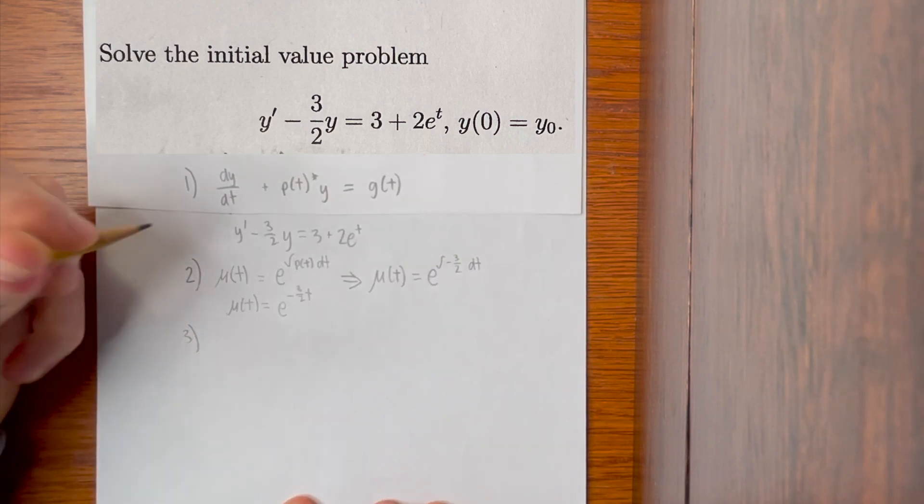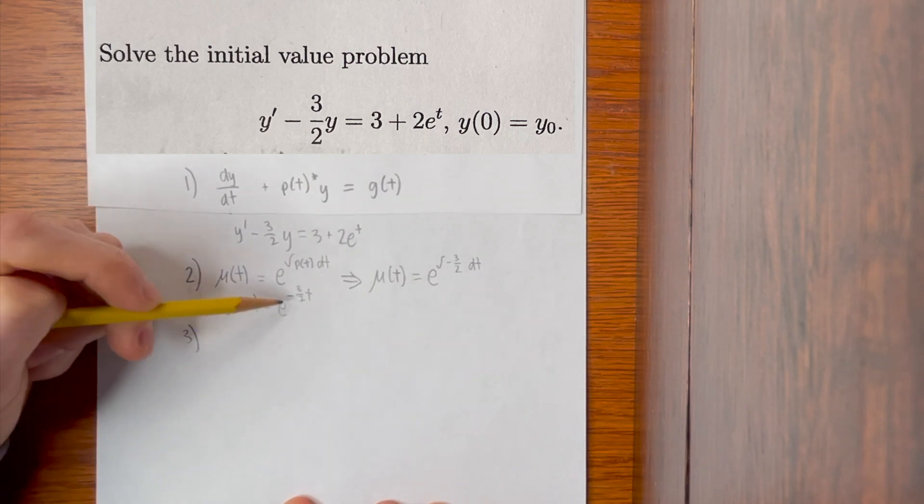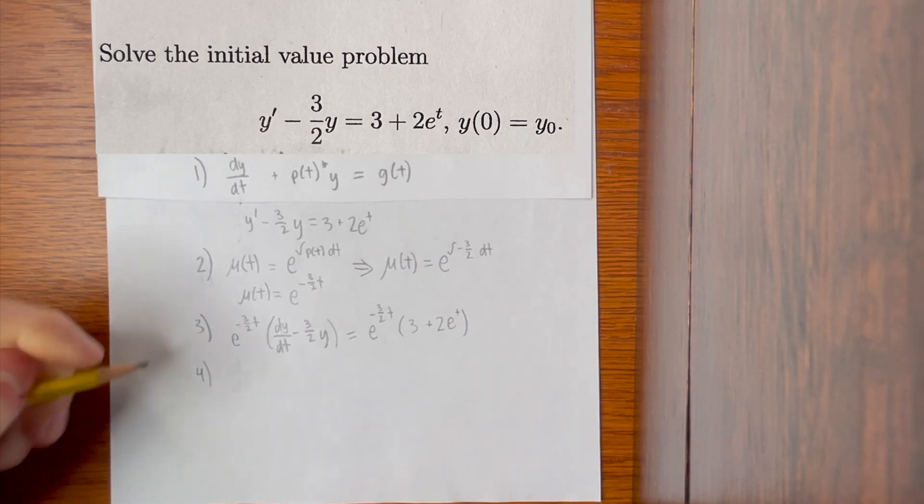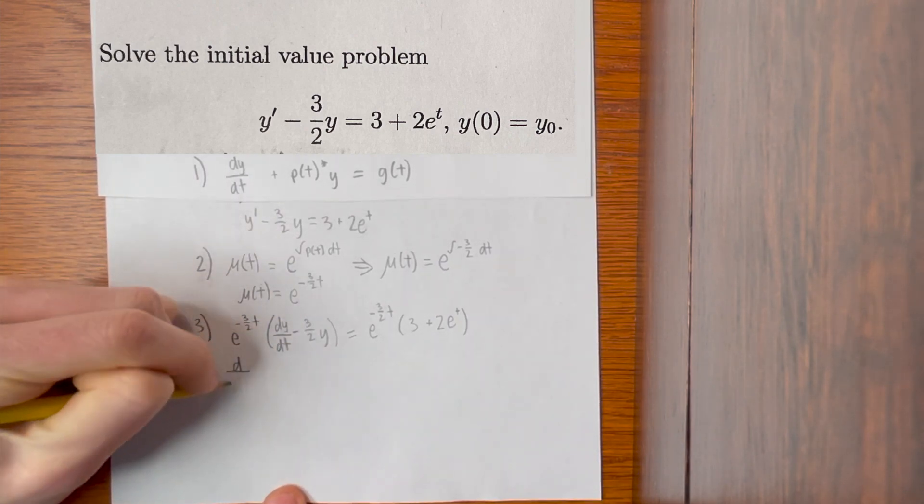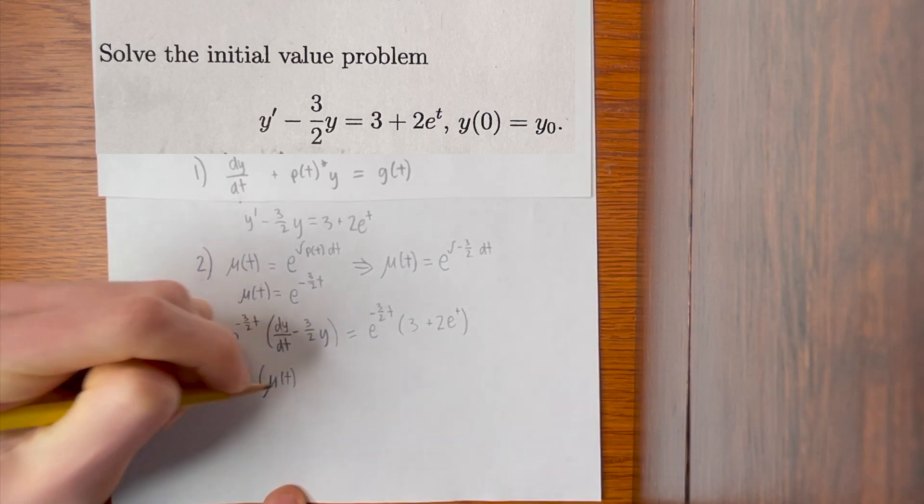The third step is to multiply both sides of this differential equation by this integrating factor. I simply rewrote y' as dy/dt. The next step is to rewrite the left side of the equation, which always becomes d/dt times μ(t), which is the integrating factor times y.